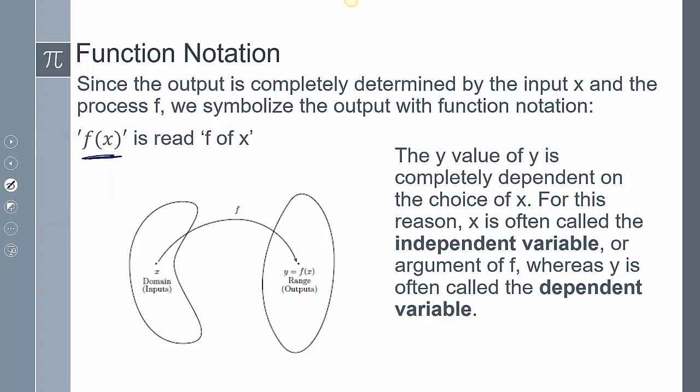Now this symbology here is read f of x. That's how we read it. And so this visual description here is saying that whatever x that I have as an input, how it's going to be mapped to my output, or y, or f of x, there can only be one.